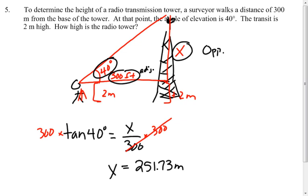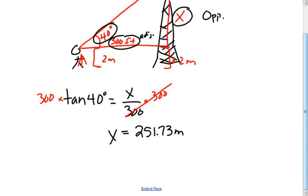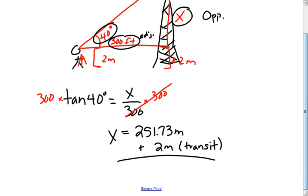But I need to add those 2 meters for the transit, because the person is not measuring from ground level — they're measuring from eye level. Adding the 2 meters gives a final answer of 253.73 meters for the height of the tower.